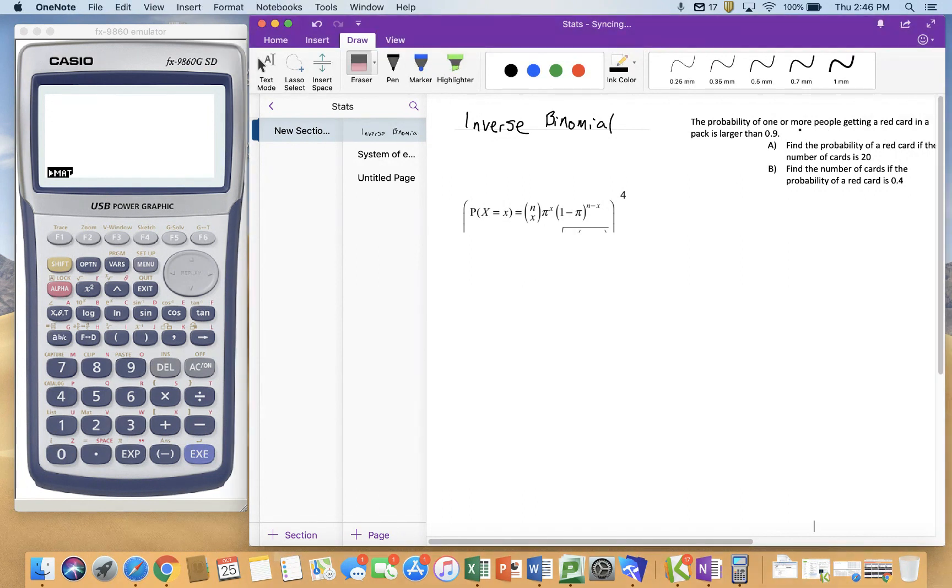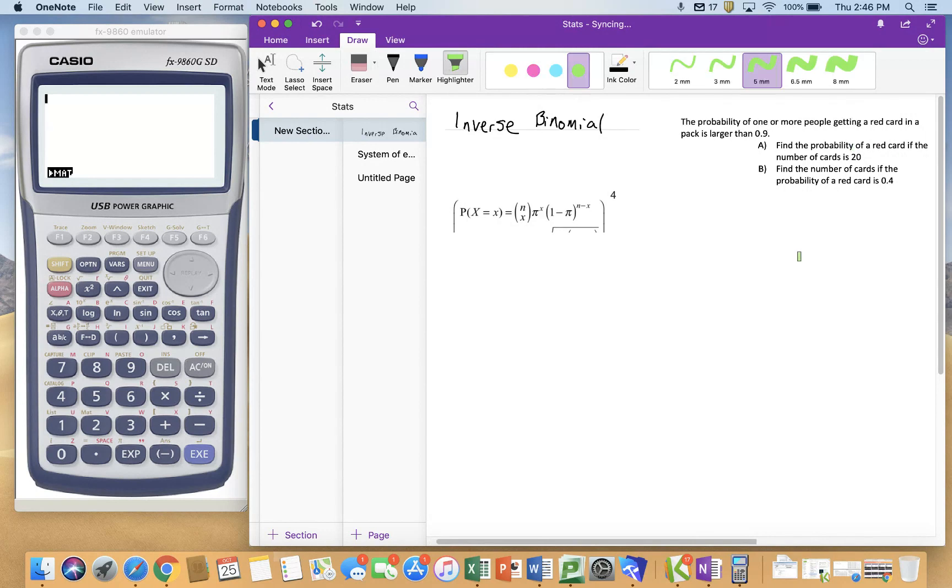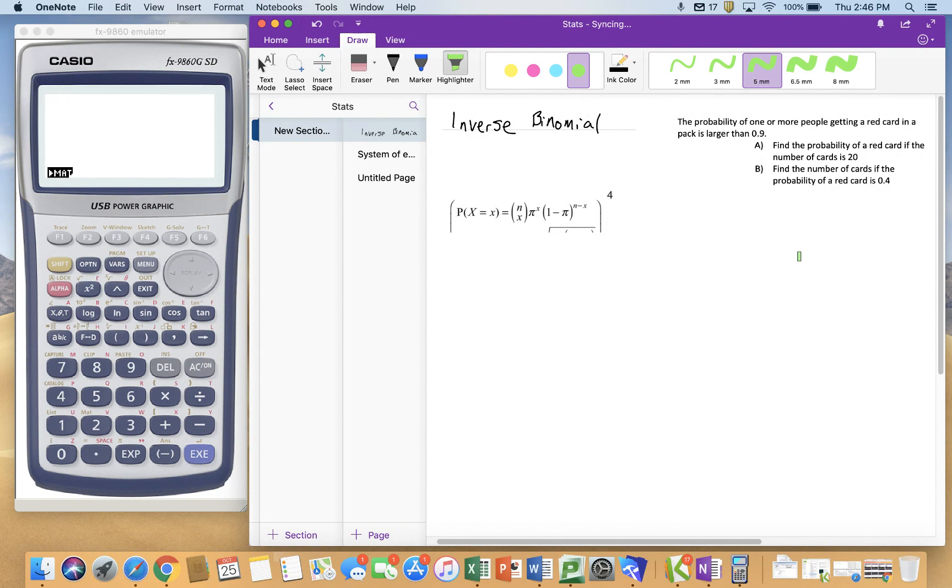So one of them, they tell me the probability of something happening. The first one says find the probability of a single red card if the number of cards is 20, and the other one is find the number of cards if the probability of a red card is 0.4. So that's where we're heading to.